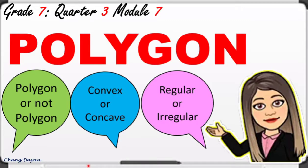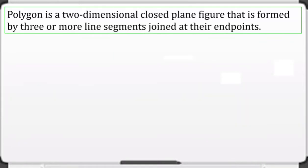Good day everybody. For today's lesson we'll cover polygons — whether a figure is a polygon or not a polygon, convex or concave polygon, and regular or irregular polygon. Let's define polygon first: a polygon is a two-dimensional closed plane figure that is formed by three or more line segments joined at their endpoints.